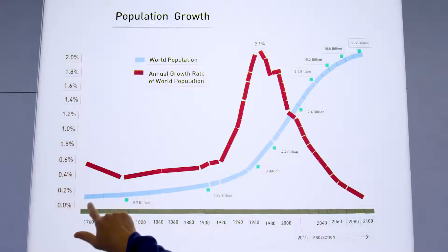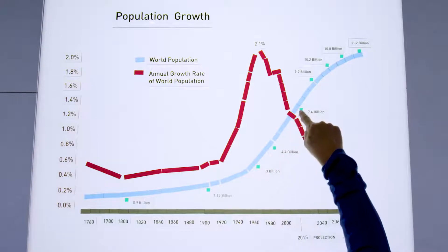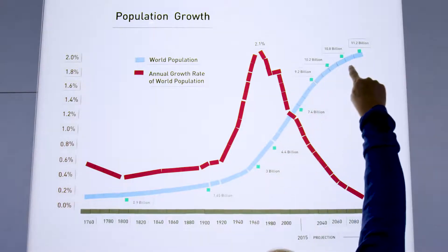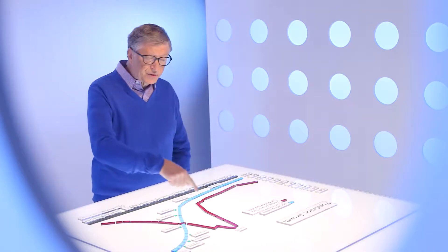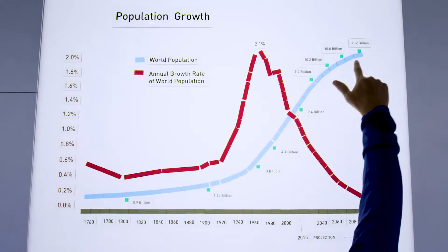So we've taken that chart that shows the global population growth, and we've actually extended it out all the way to 2100. And we can see that instead of continuing, it actually flattens out.